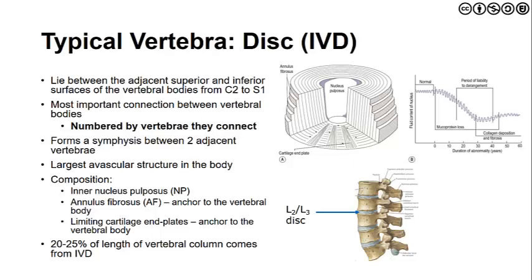The disc forms a symphysis or combination between vertebrae. While the periphery of the disc does have some vascular supply, the vast majority of the disc is avascular — a characteristic that has both advantages and disadvantages we will discuss as we examine each spinal region.